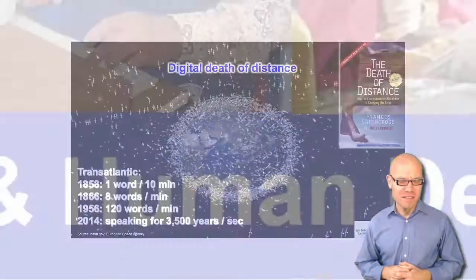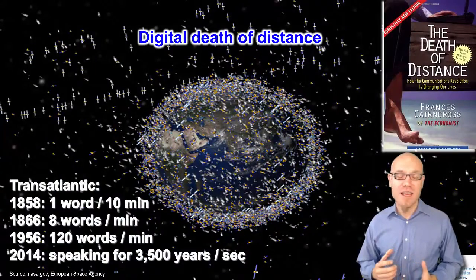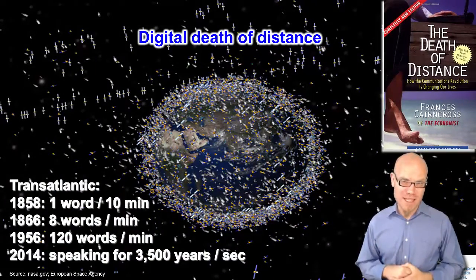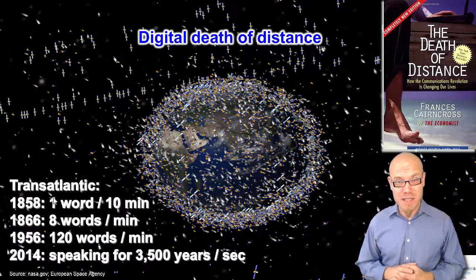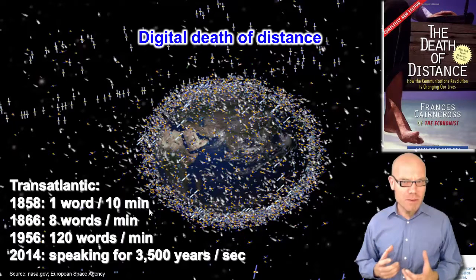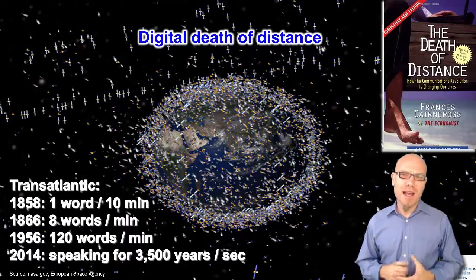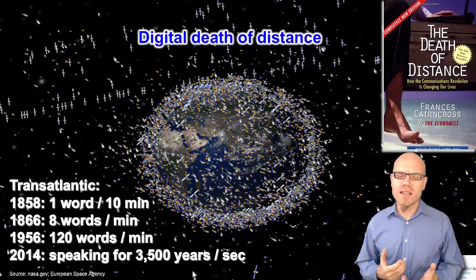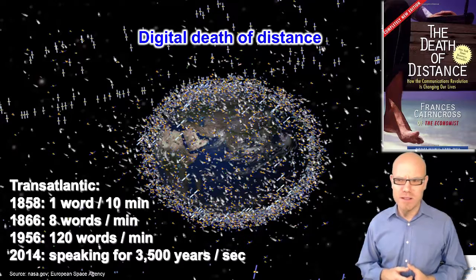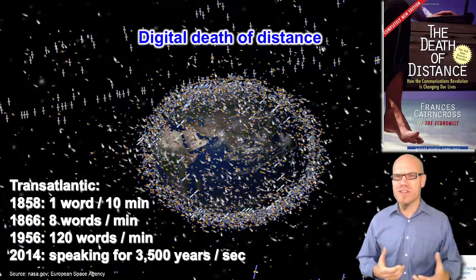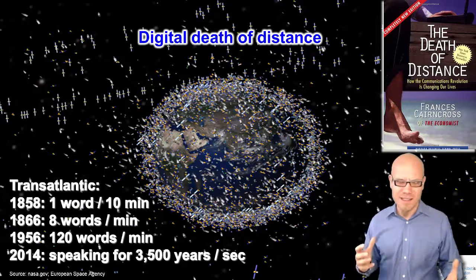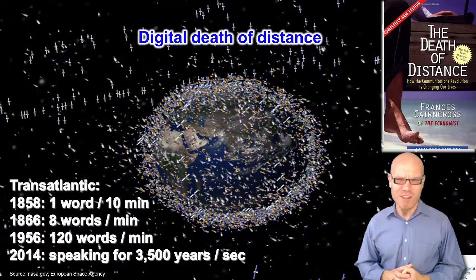In only 150 years, information communication technologies have made our world an extremely small place. Before 1858, it took weeks to communicate a message between Europe and the United States by ship. And nowadays, we cannot really tell a difference if we telecommunicate with somebody who is down the road next block or halfway around the globe. Information travels at the speed of light and instantaneous communication doesn't recognize distance in a geographical sense.